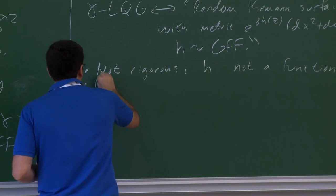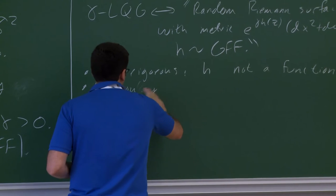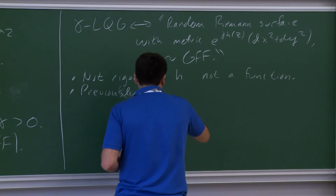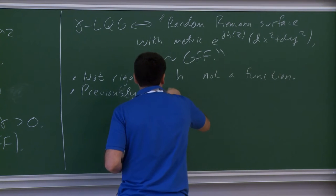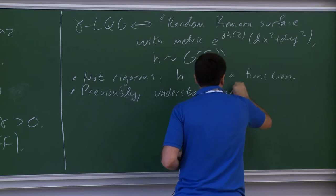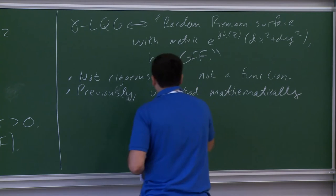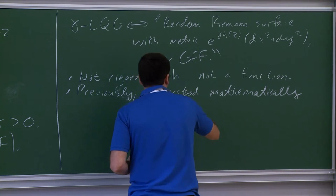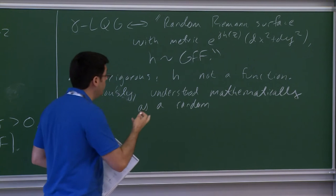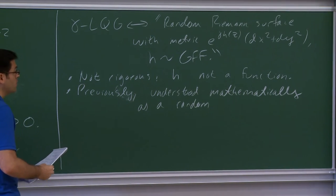Previously, this has only been understood mathematically as a random area measure. In other words, people have constructed the volume form associated with quantum gravity but not the metric — not the notion of distance.